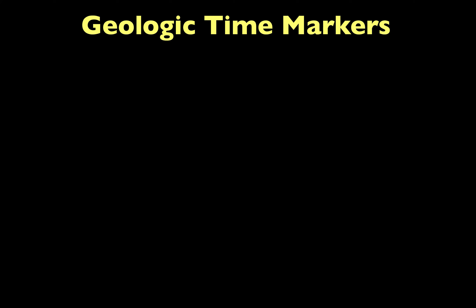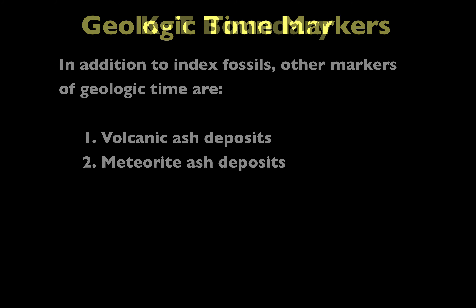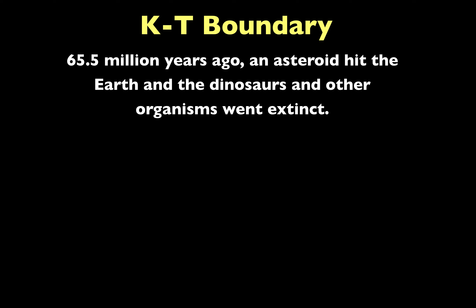Similar to index fossils, there are other objects we call geologic time markers — other events and materials that can help us determine time periods of the past. Those two time markers can be volcanic ash deposits or meteorite and asteroid ash deposits. For example, 65.5 million years ago, an asteroid hit the Earth and the dinosaurs and other organisms went extinct.